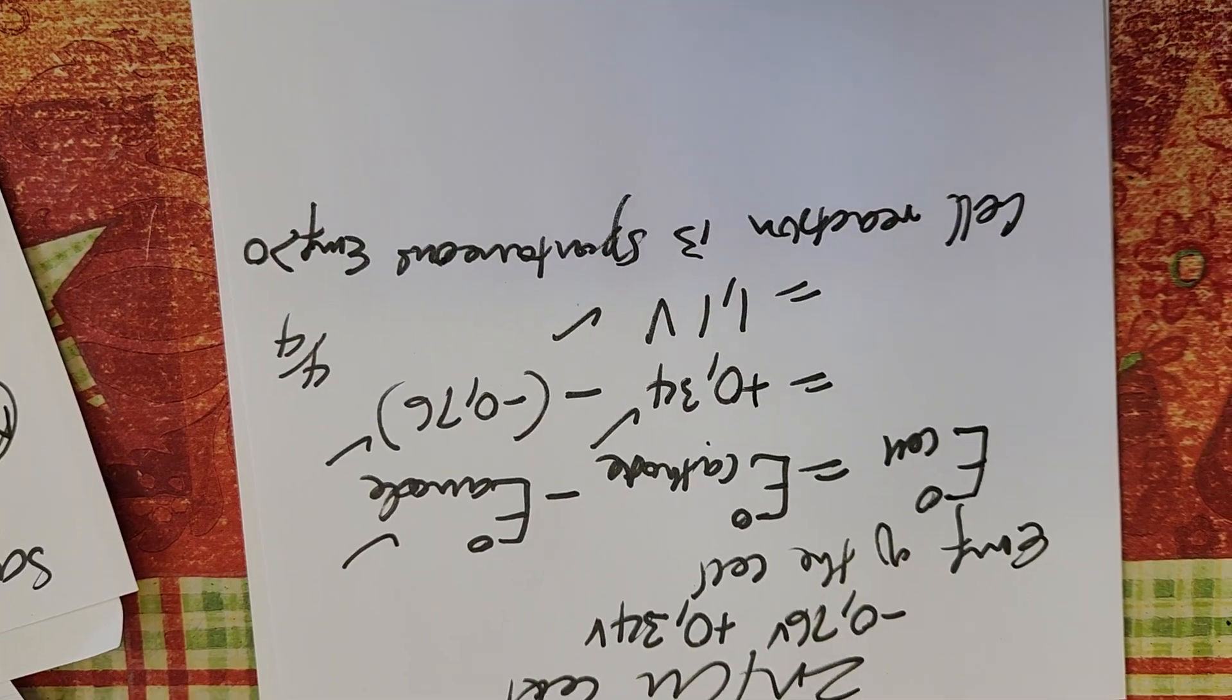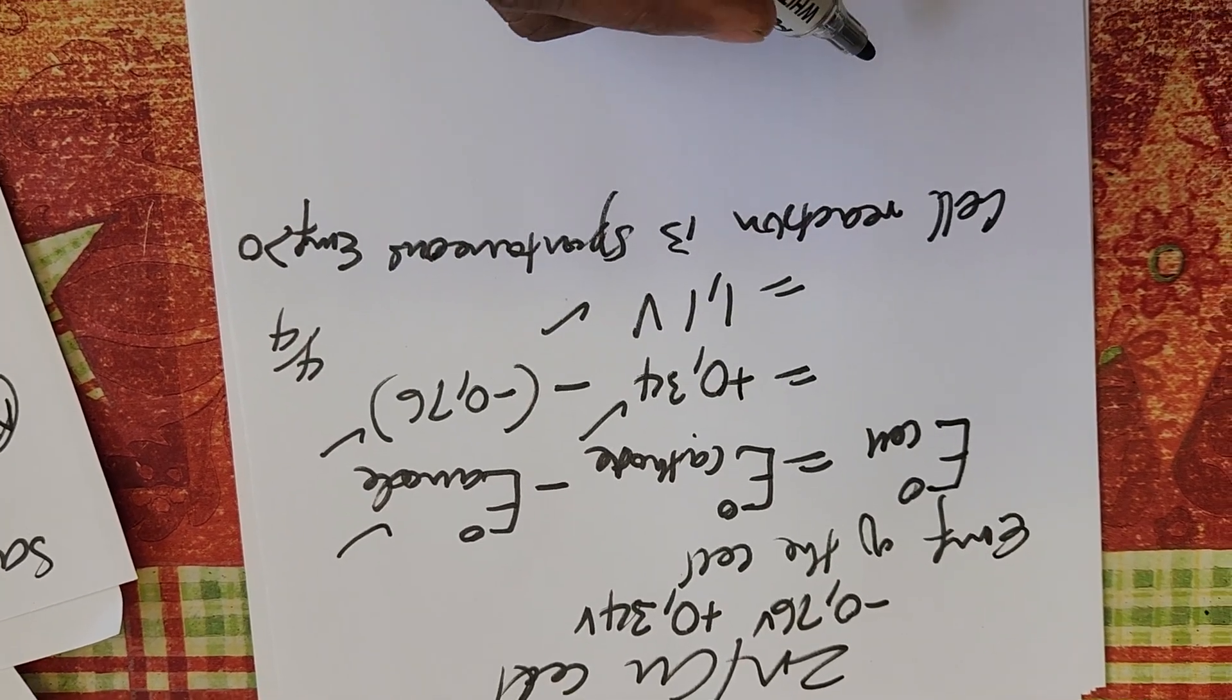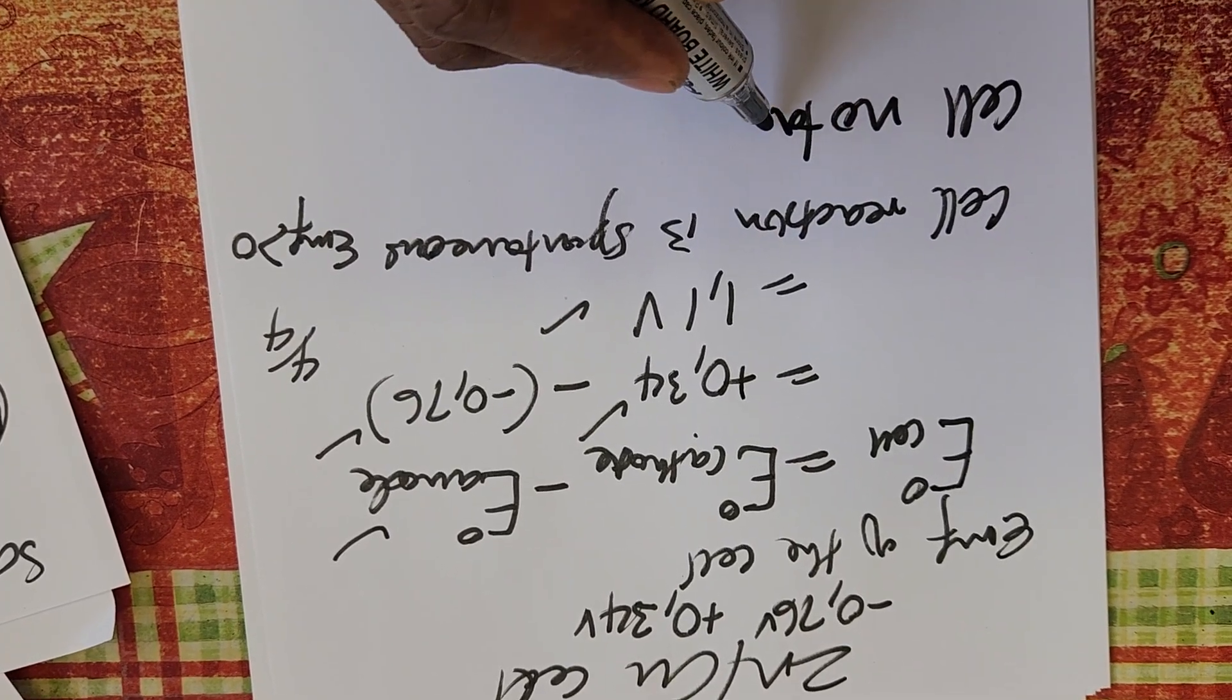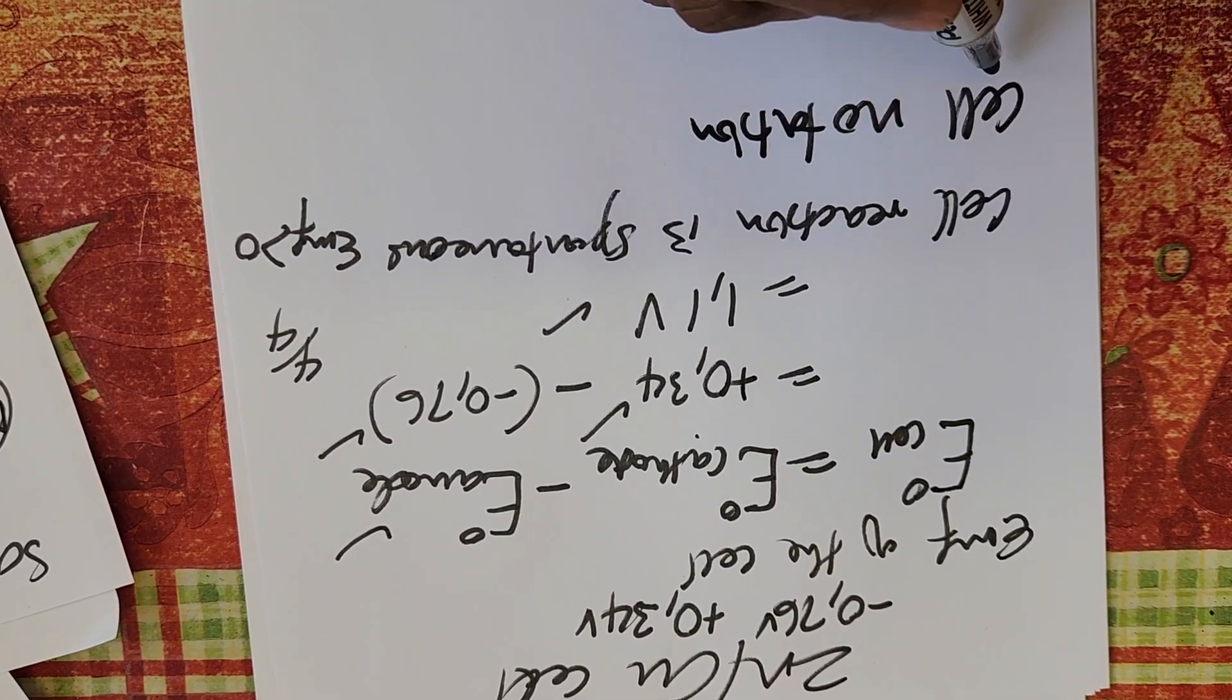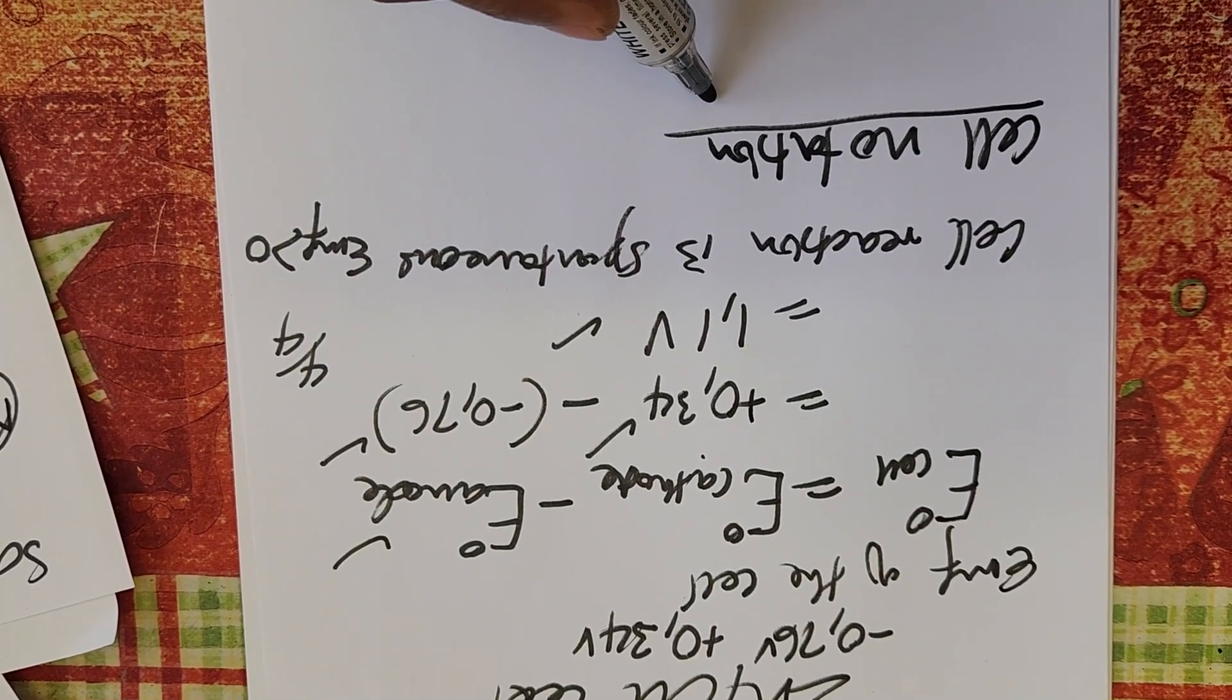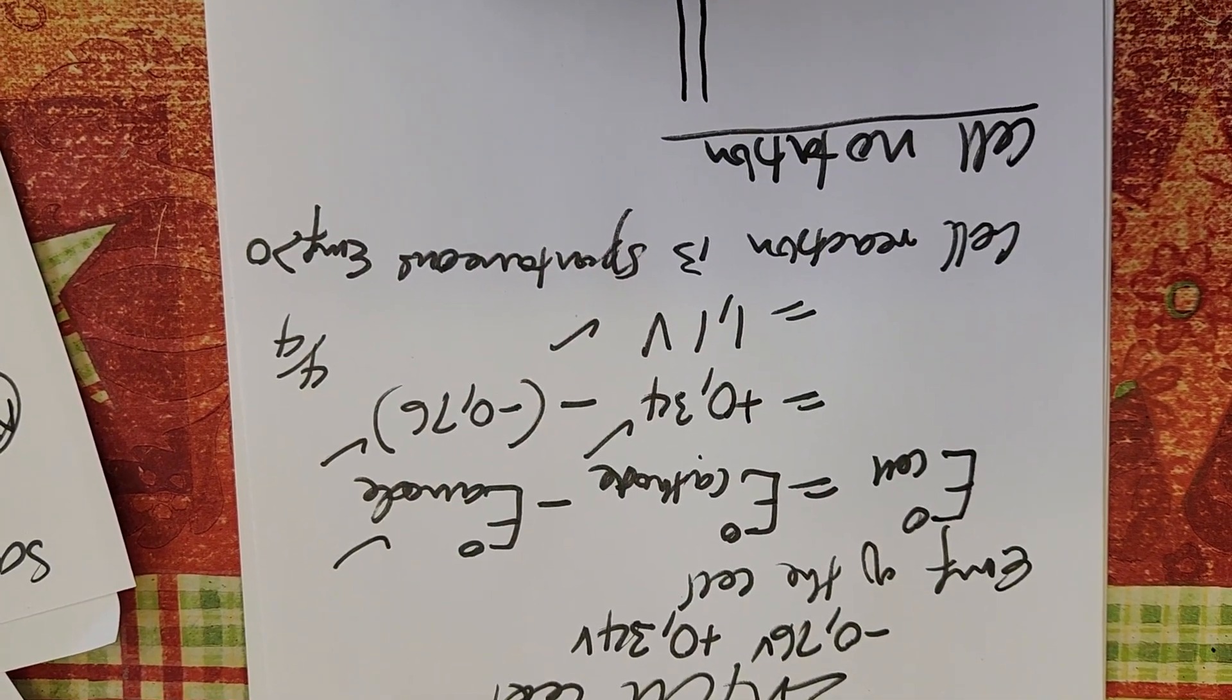From this we can take it further and say write down the cell notation. The cell notation—in the olden days they used to call it symbolic representation.